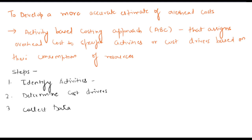Fourth, calculate the activity rates by dividing the total overhead cost for each activity by the total quantity of the cost driver for that activity. This gives the overhead cost per unit of cost driver for each activity.